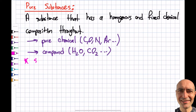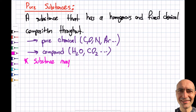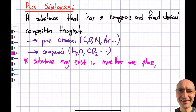One important point: a pure substance does not have to exist in only one phase. As I mentioned in Module 1, a substance may exist in more than a single phase. What matters is that the chemical composition must be the same across all phases present.